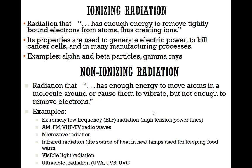Some examples of ionizing radiation are alpha radiation, beta radiation, gamma radiation, as well as x-rays. The alpha radiation releases alpha particles and the beta radiation releases beta particles. Non-ionizing radiation, on the other hand, has just enough energy to move atoms in a molecule around or cause them to vibrate.